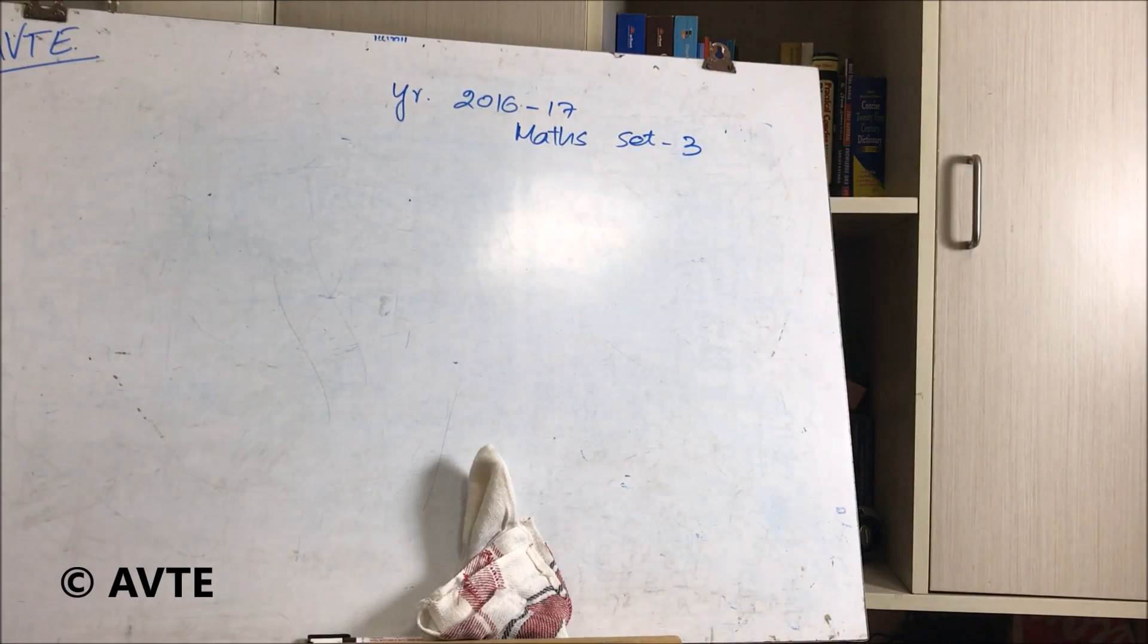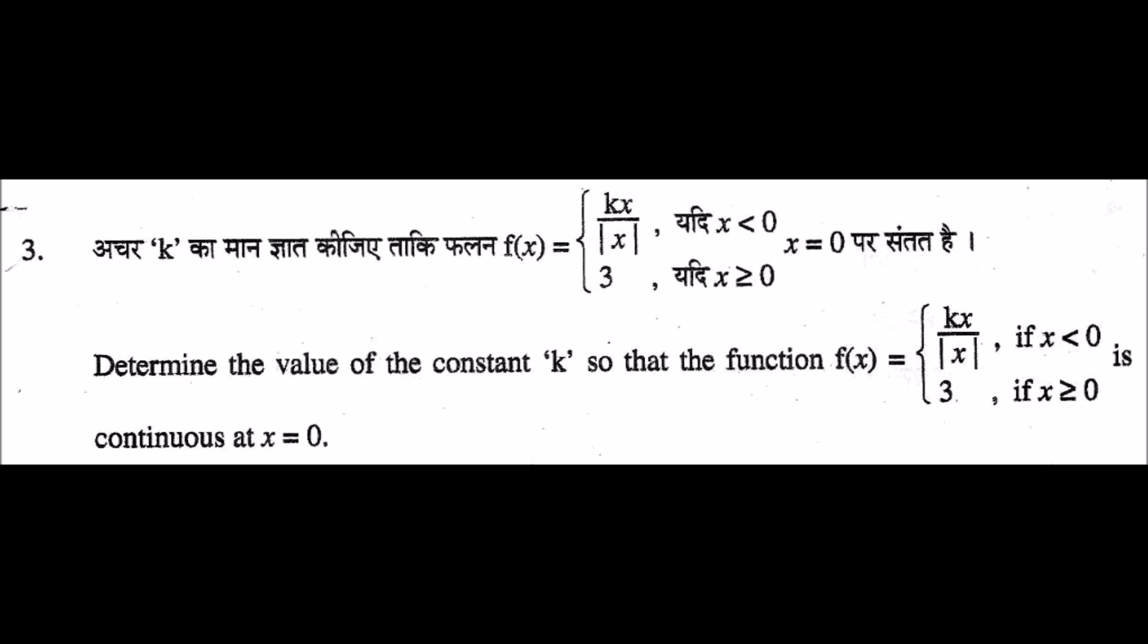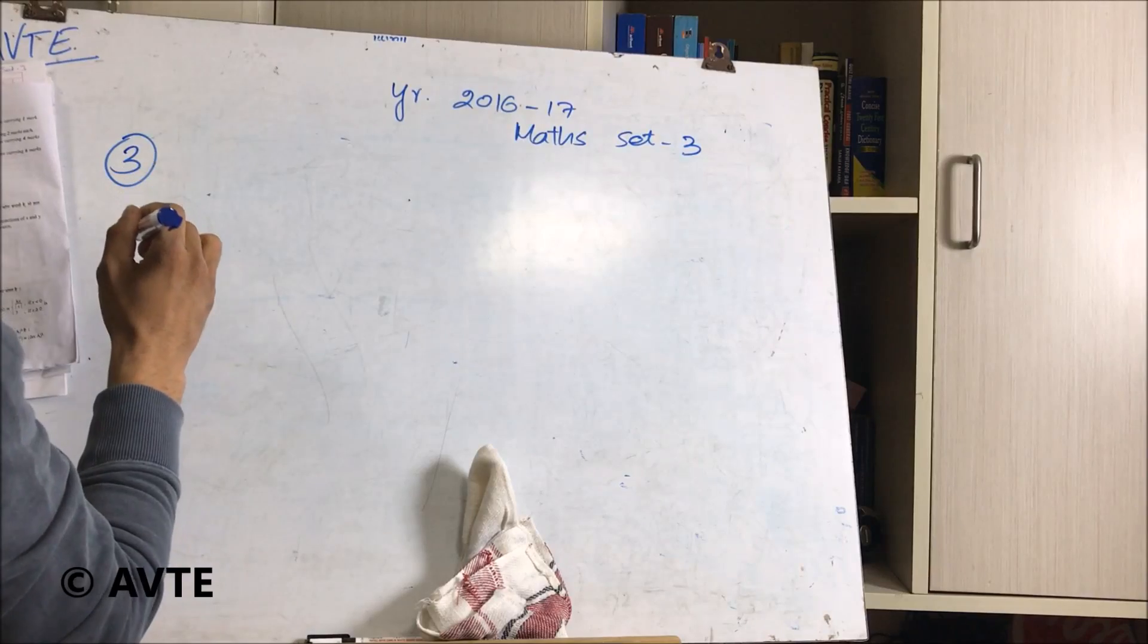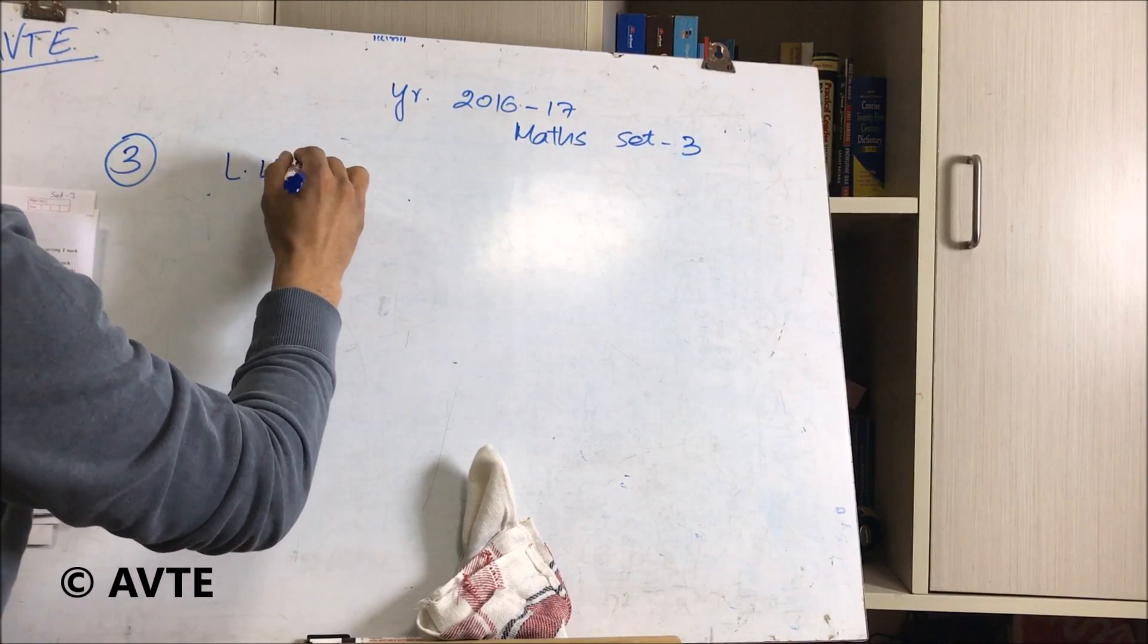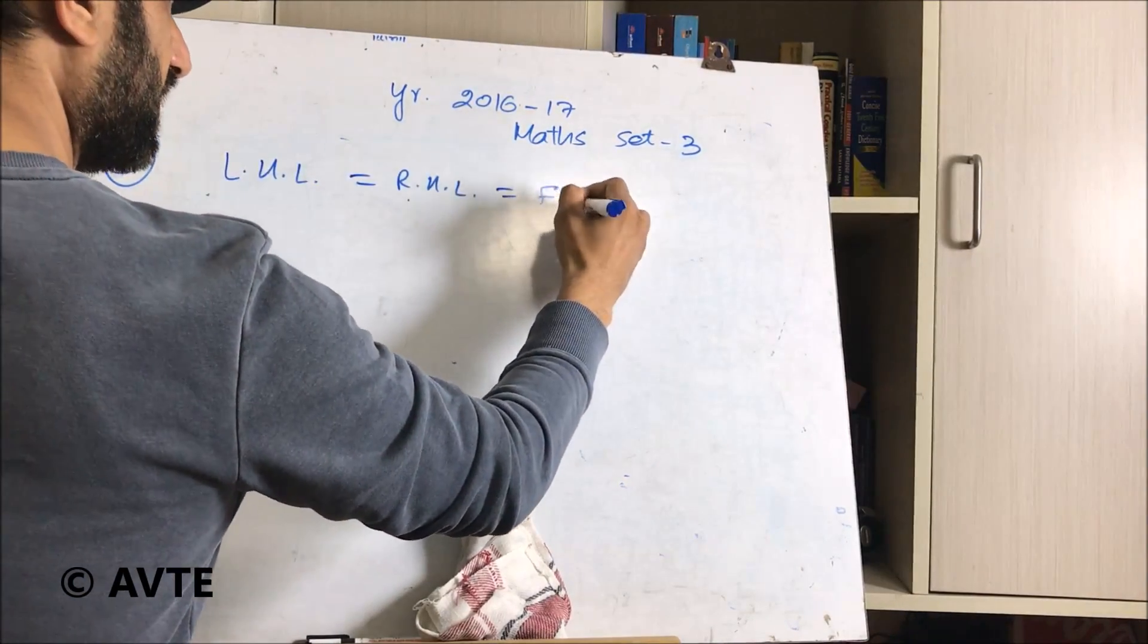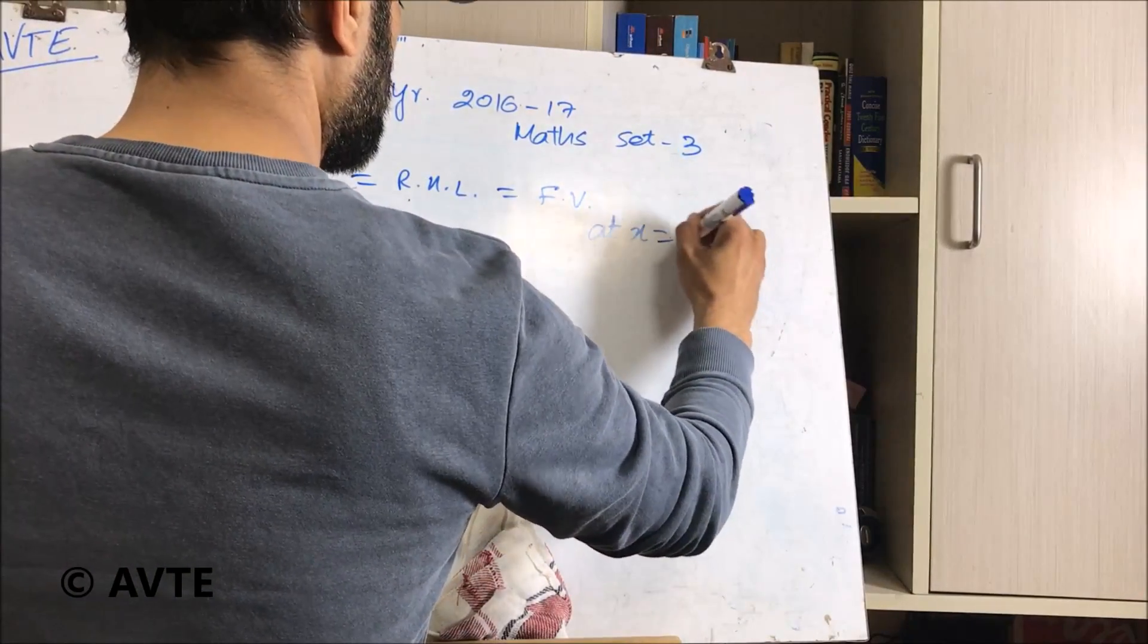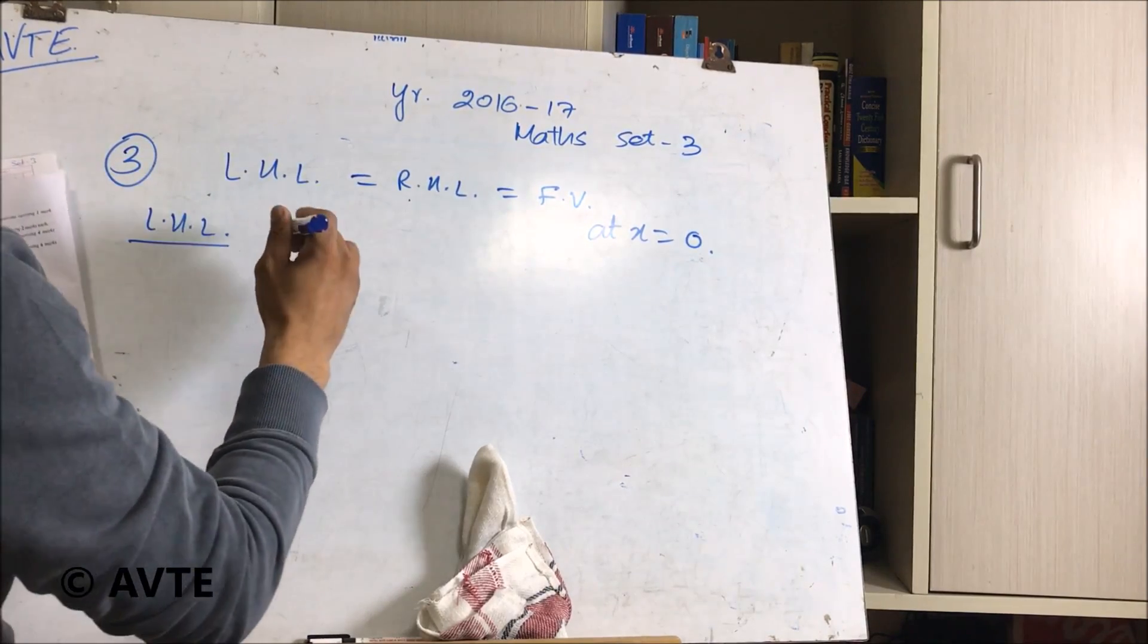Coming on to the solution of third question. We are given that the function is continuous. If the function is continuous, then its left-hand limit is equal to right-hand limit is equal to functional value. And in this case, it is at x is equal to 0. So we will be calculating the left-hand limit from the first branch.